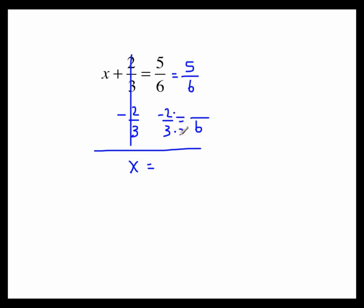3 times 2 is what will give me the 6, so I must multiply by 2 on the top, giving me 4. Now pay attention, that is a minus sign we are subtracting. 5 sixth minus 4 sixth is just 1 sixth.